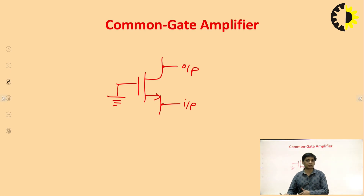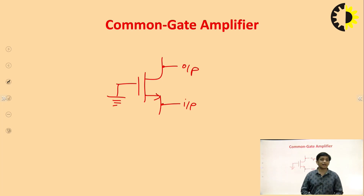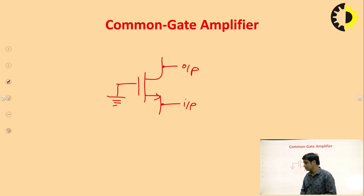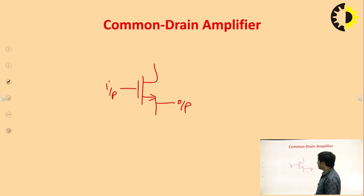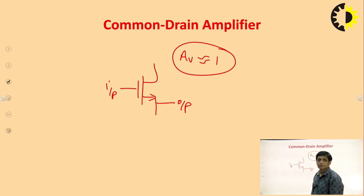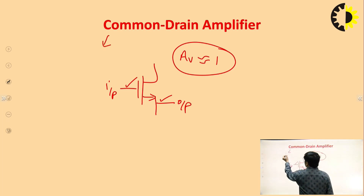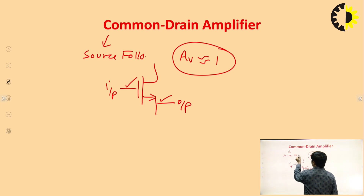The Miller effect is another topic you will study further. Common gate is used for high frequency applications and also acts as a current buffer — when we need to design a current follower, common gate is good. As far as the common drain amplifier is concerned, when we calculate its voltage gain, it is approximately 1 — meaning input voltage equals output voltage. The output at the source terminal follows the input at the gate terminal, which is why the common drain amplifier is called a source follower.